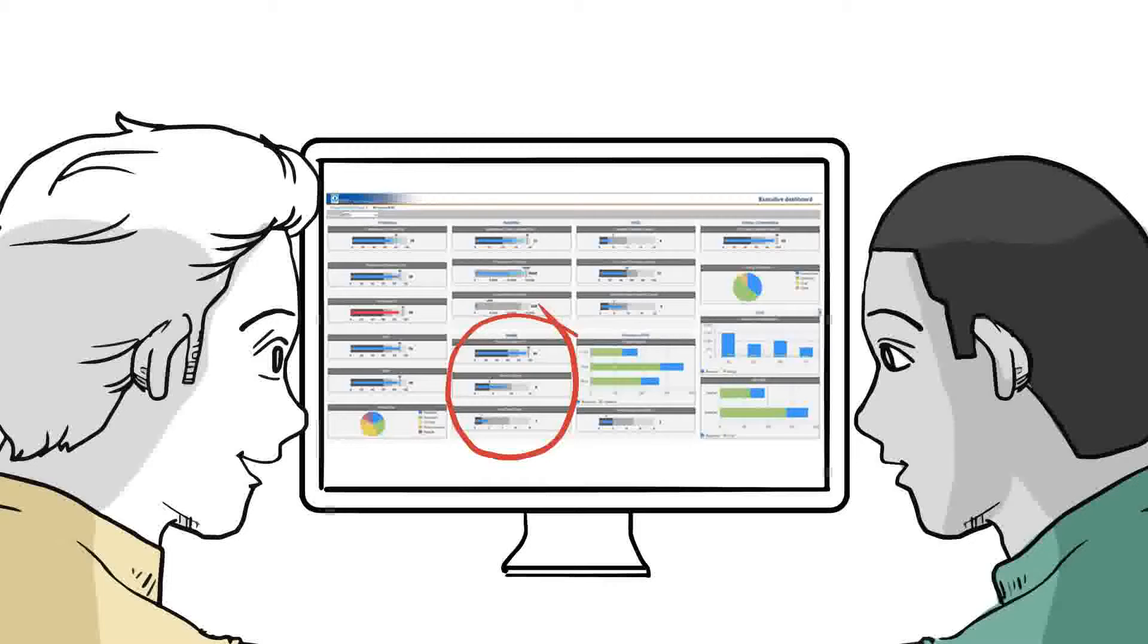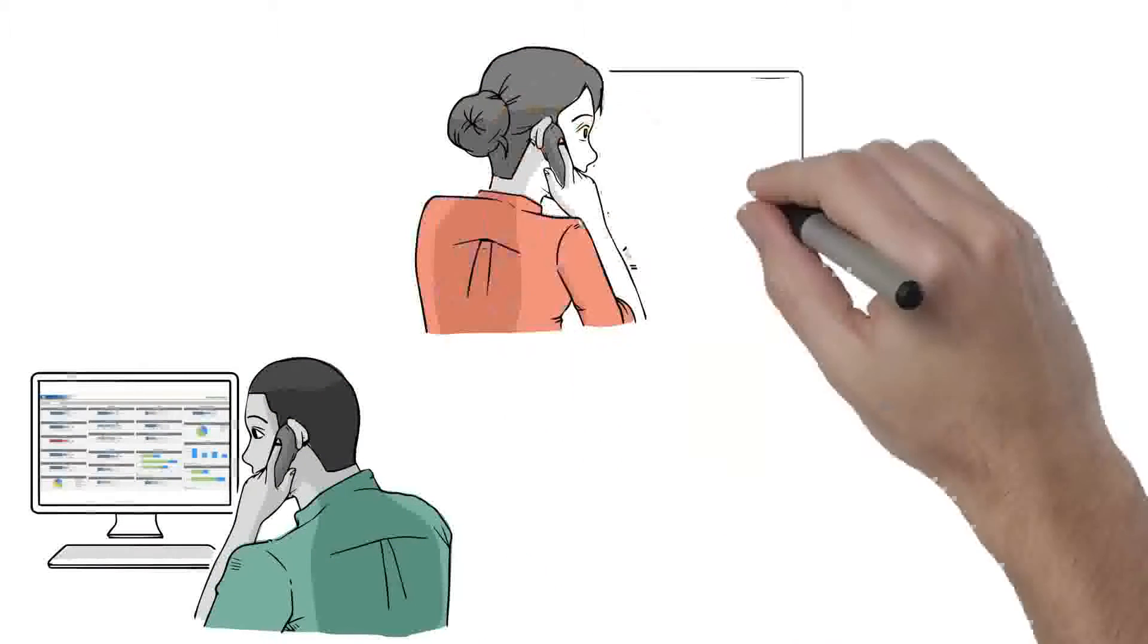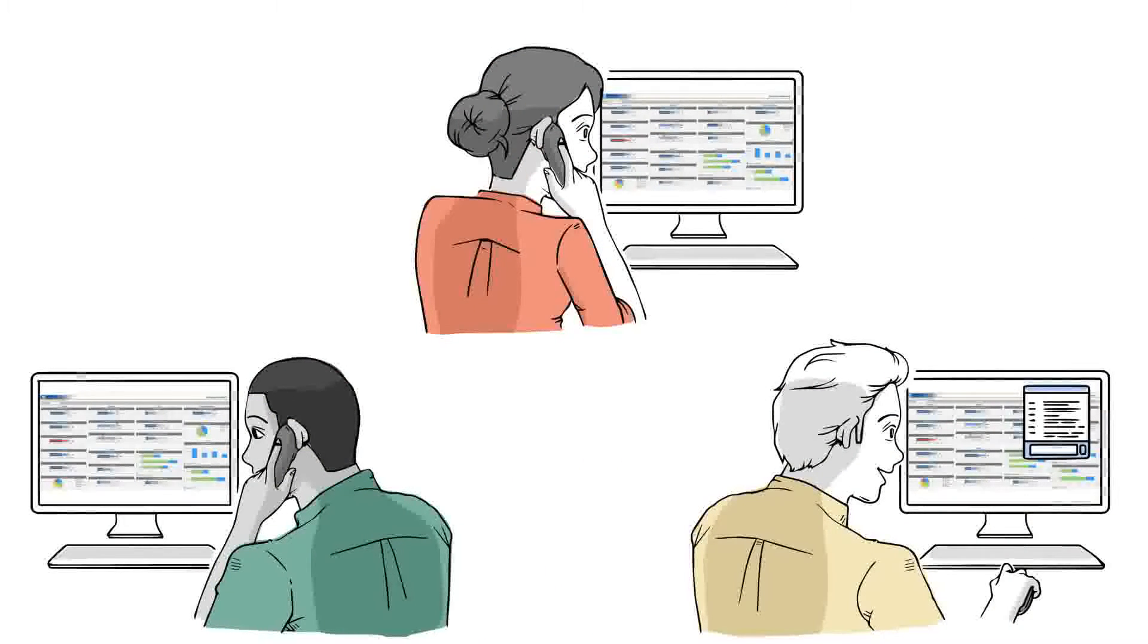Plus, Rolta OneView analyzes trends over time to help solve tough problems and boost efficiencies across the entire plant. All of this in near real time, so the data is fresh and available to people at all levels of the organization.